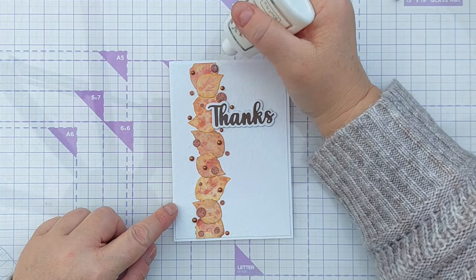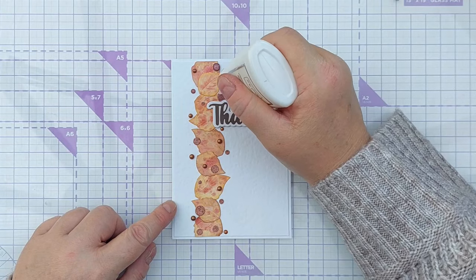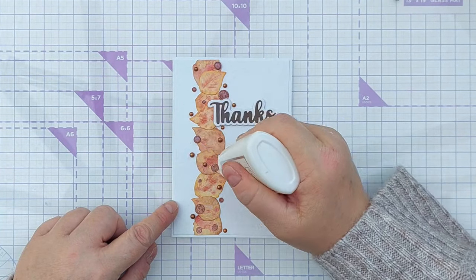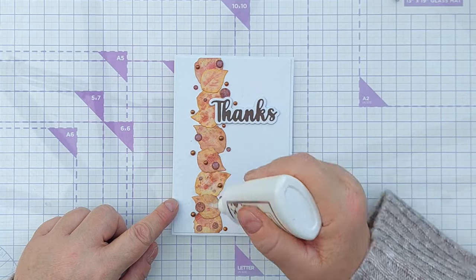I wanted a bit more shine on my card, so I added some Nuvo crystal glaze to the copper glitter cardstock circles. So they're now slightly dimensional and glossy, and that gloss really does bring out the glitter in the cardstock. It's lovely.